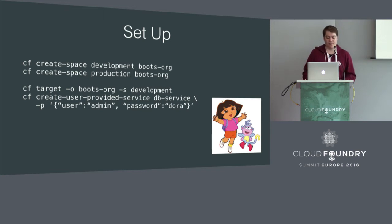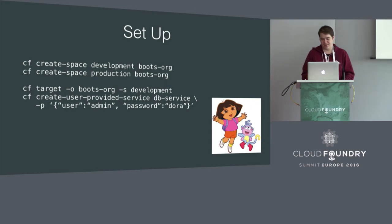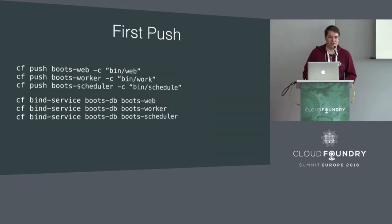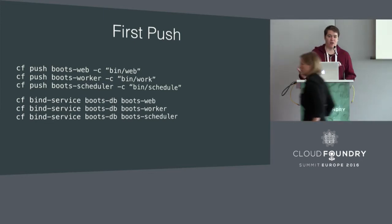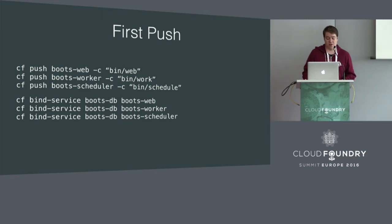This could be a database - it could be anything. In this example, we're going to make a couple of spaces for our Boots app and create a user provided service. The password is Dora - don't tell anyone. So when you're pushing that application, let's say you've got a standard web application with three different processes that need to run: a web application, a worker application to process jobs, and a scheduler application to tell that worker what to do.